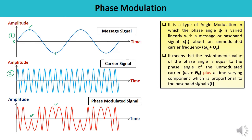Phase modulation is a type of angle modulation where the phase angle phi is varied linearly with the message signal about an unmodulated carrier frequency. The instantaneous phase angle phi_i equals omega_c + kp * x(t), where kp is the phase sensitivity of the modulator.